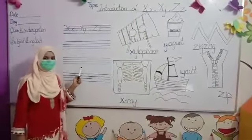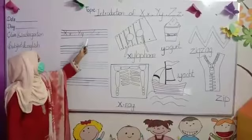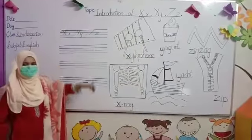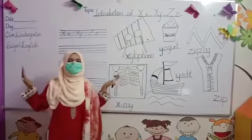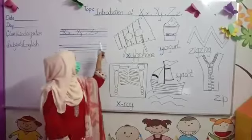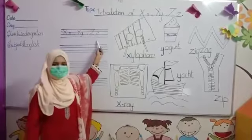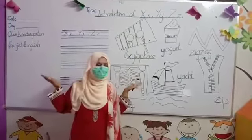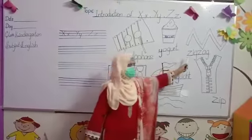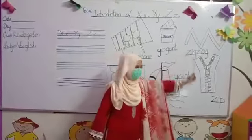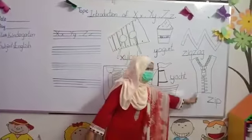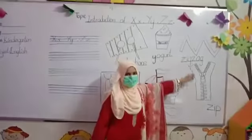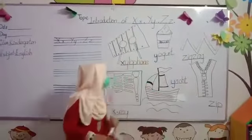And our last letter is letter Z and its sound Z. Letter Z, sound Z, Z, Z. Zigzag — Z. Zip — Z. Zigzag — Z. Zip.